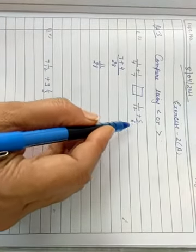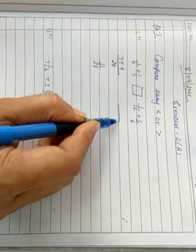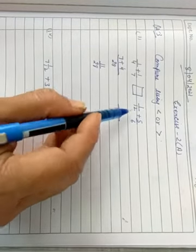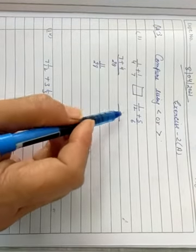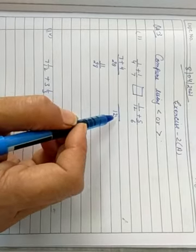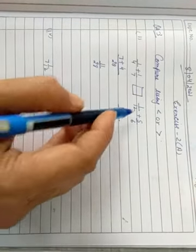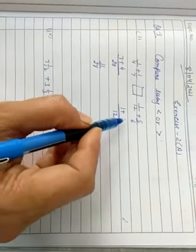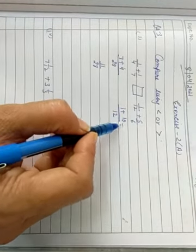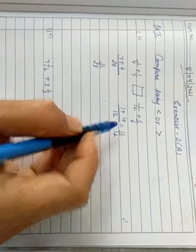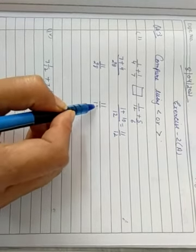Now, 1 upon 12 plus 5 upon 6. Take LCM. LCM is 12 because 12 is multiple of 12 and 12 is also multiple of 6. 12 ones are 12, 1 one is 1. 6 twos are 12, 2 fives are 10. It means 11 upon 12.